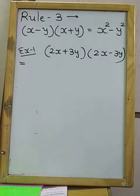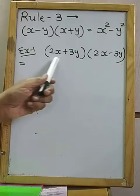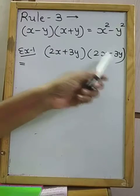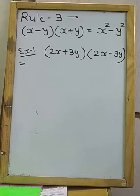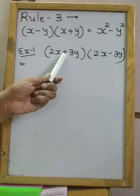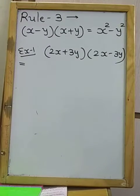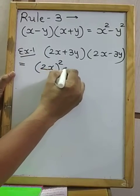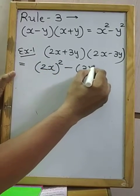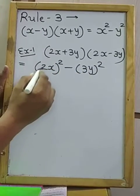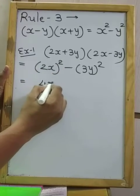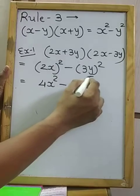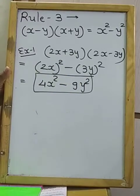There is multiplication between the two brackets and the two terms in each bracket are equal — only the sign is different, plus and minus. So: square of first term minus square of second term. 2² = 4x² minus 3² = 9y². That is your answer: 4x² − 9y².